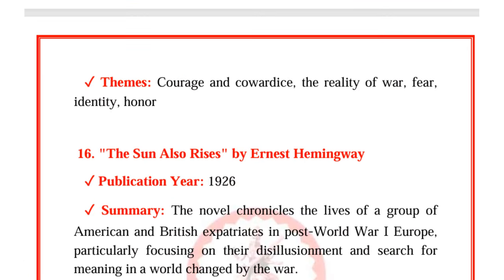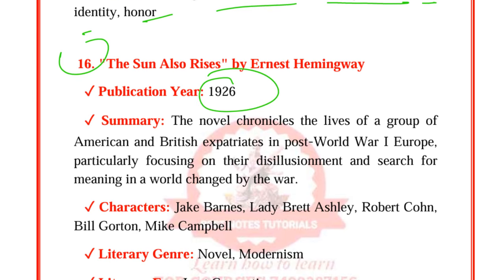The Red Badge of Courage by Stephen Crane was published in 1895. Set during the American Civil War, the novel follows Henry Fleming, a young soldier who grapples with fear, courage, and the harsh reality of battle, ultimately confronting his own notion of heroism. Characters include Henry Fleming, Jim Conklin, Wilson, and the Tattered Soldier. The genre is war fiction and realism, related to naturalism. Themes are courage and cowardice, the reality of war, fear, identity, and honor.